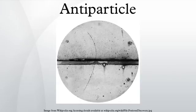Since then, the antiparticles of many other subatomic particles have been created in particle accelerator experiments. In recent years, complete atoms of antimatter have been assembled out of antiprotons and positrons, collected in electromagnetic traps.